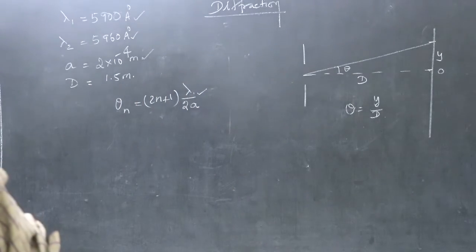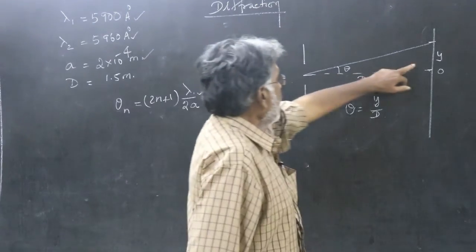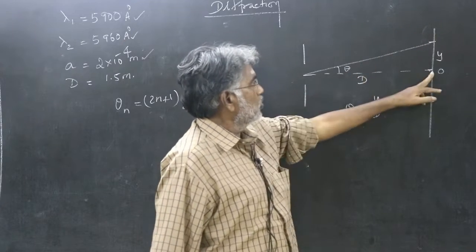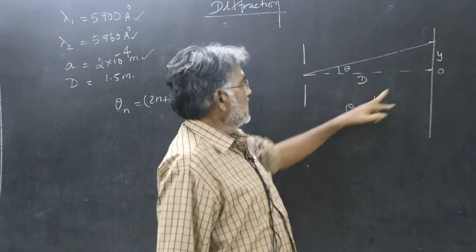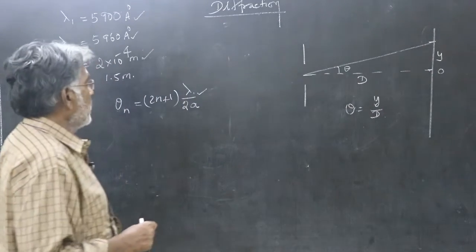So, here you take theta to be tan theta y by D. This is angular separation between the two, whatever it is. Linear separation means y. So, theta can be replaced as y by D.